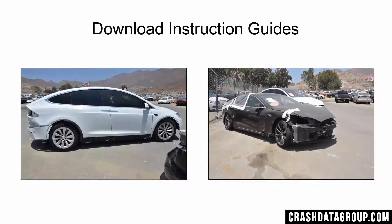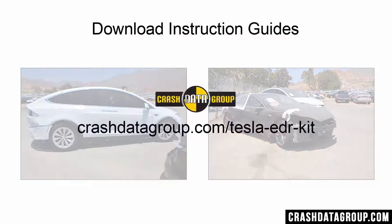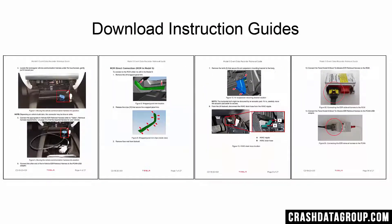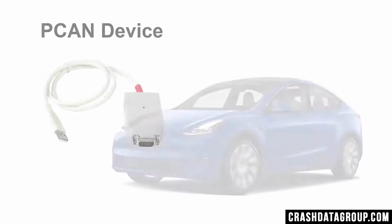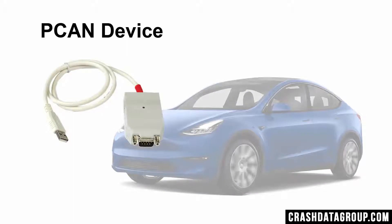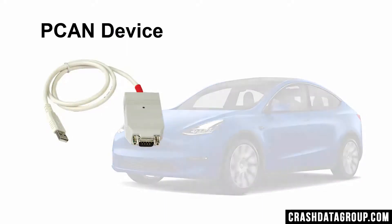Tesla has produced step-by-step EDR download instruction guides for each Tesla model vehicle. Links to download the instruction guides can be found on the Tesla EDR page of Crash Data Group's website. The instruction guides will indicate how to access the in-vehicle data connector for in-vehicle downloads, and they'll provide detailed instructions on how to access the RCM for direct-to-module downloads. The PECAN interface device allows your computer to communicate with the vehicle's communication network.